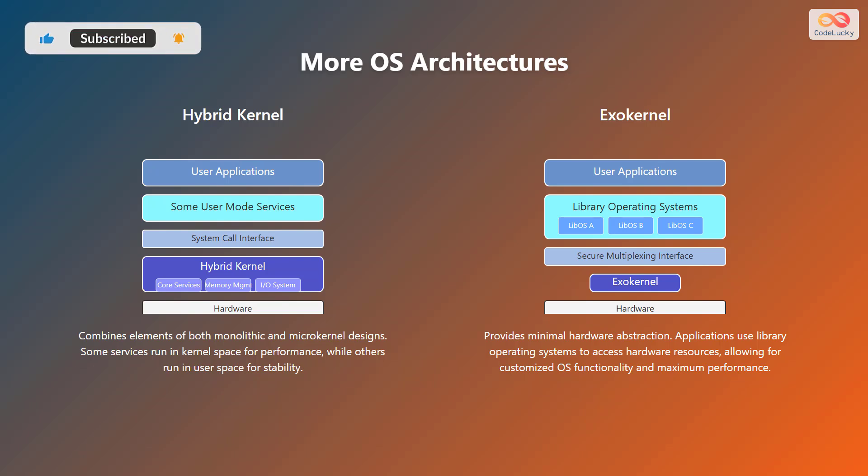Beyond monolithic and microkernels, there are other operating system architectures. A hybrid kernel combines elements of both monolithic and microkernel designs — some services run in kernel space for performance, while others run in user space for stability. An exokernel provides minimal hardware abstraction; applications use library operating systems to access hardware resources, allowing for customized OS functionality and maximum performance. In a hybrid kernel, some user mode services are separated out while core services like memory and I/O management remain inside the kernel. In an exokernel design, a secure multiplexing interface sits between library operating systems and the exokernel.